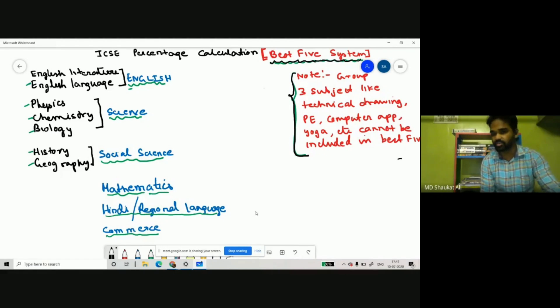Subjects like technical drawing, PE, computer application, and yoga are all excluded in best five - you can't include them. English literature and English language are clubbed as English. Physics, chemistry, and biology are clubbed as science. History and geography are clubbed as social science. Then you have mathematics, your regional language as second language, and commerce.